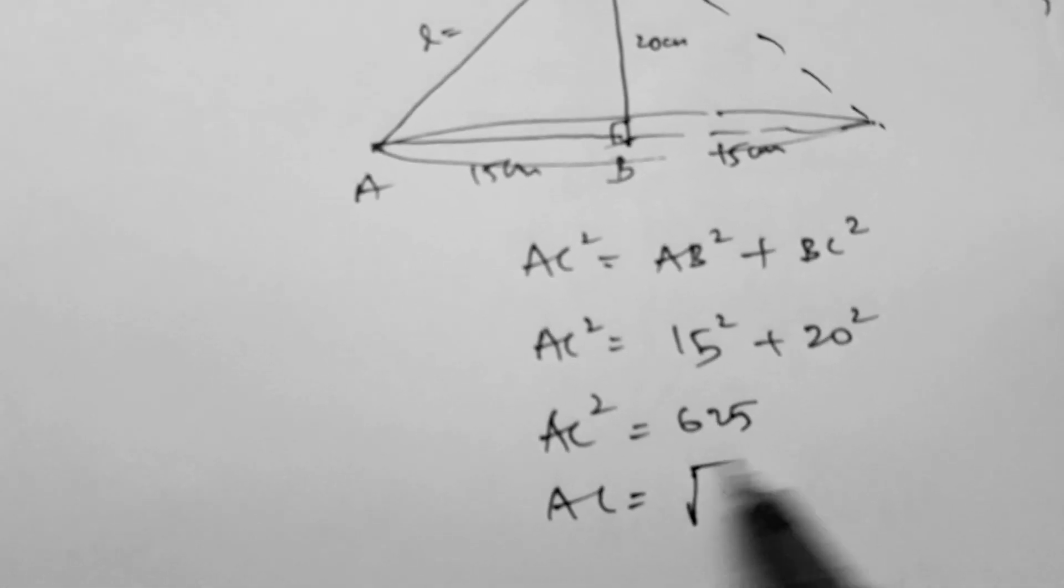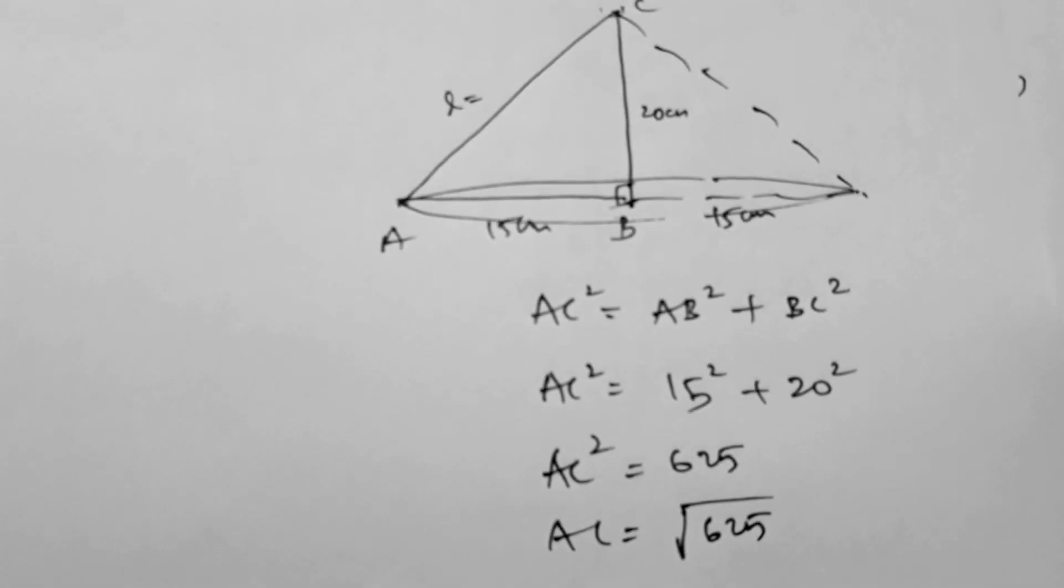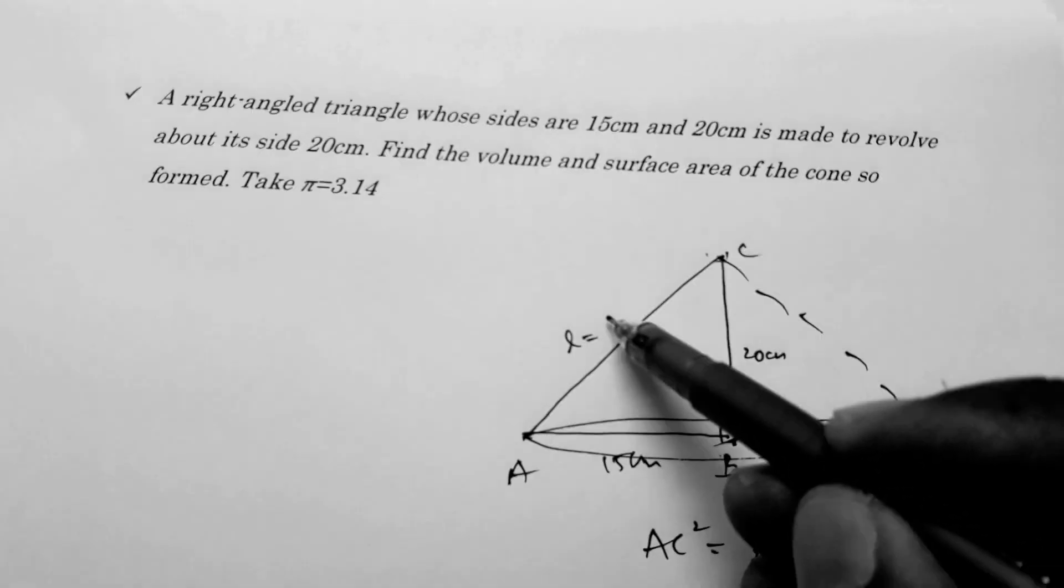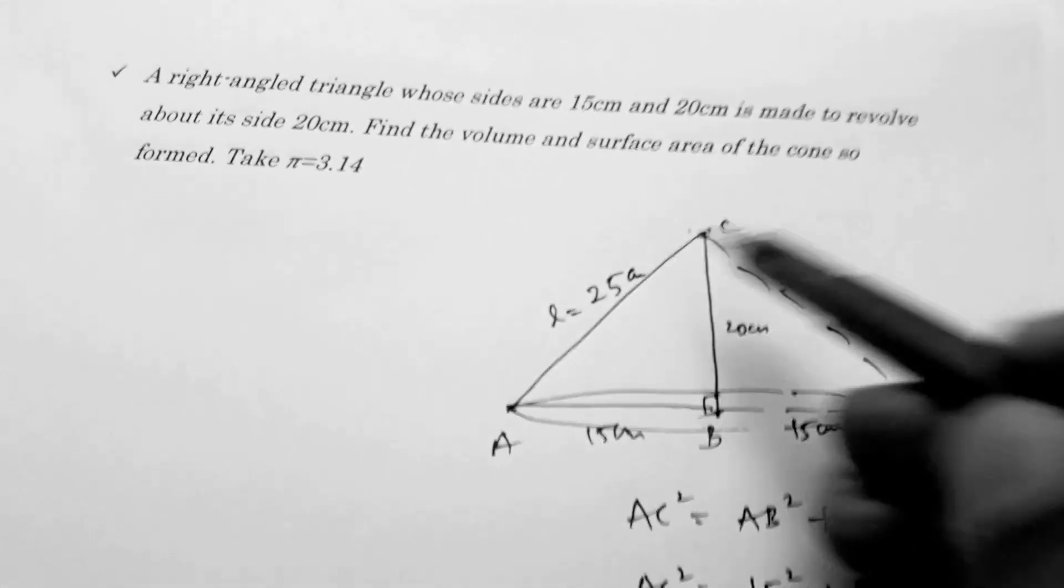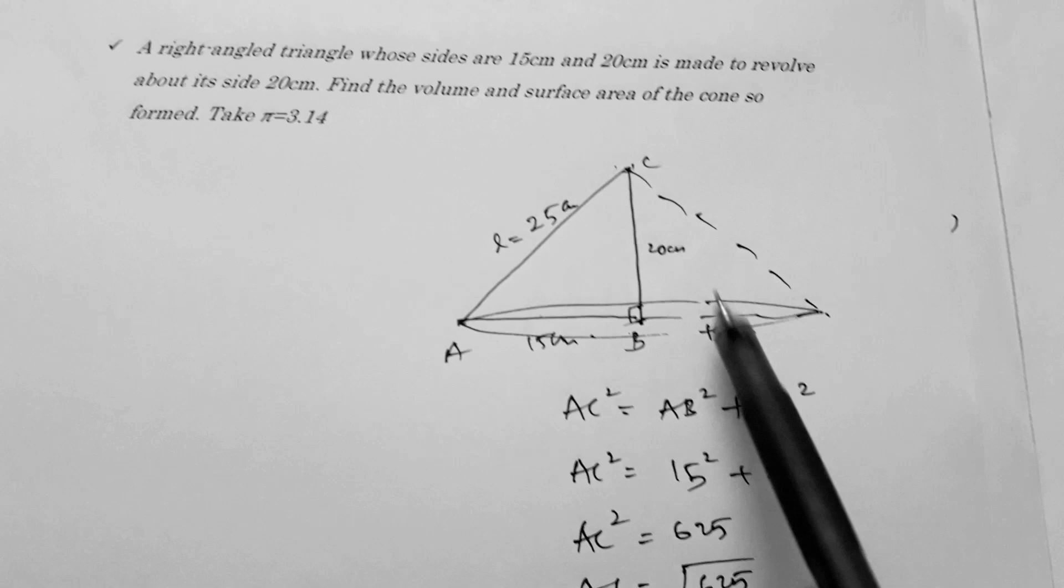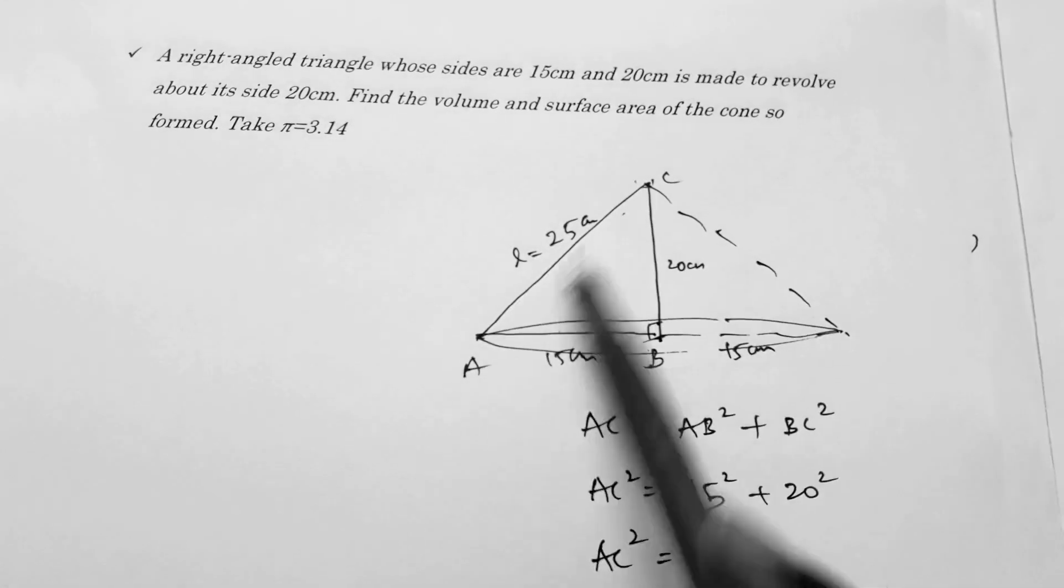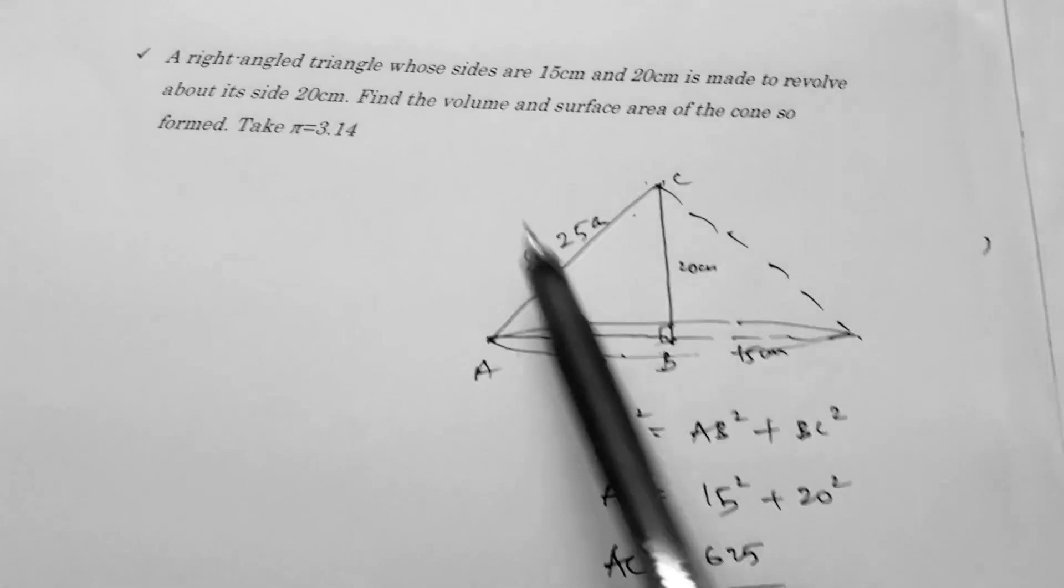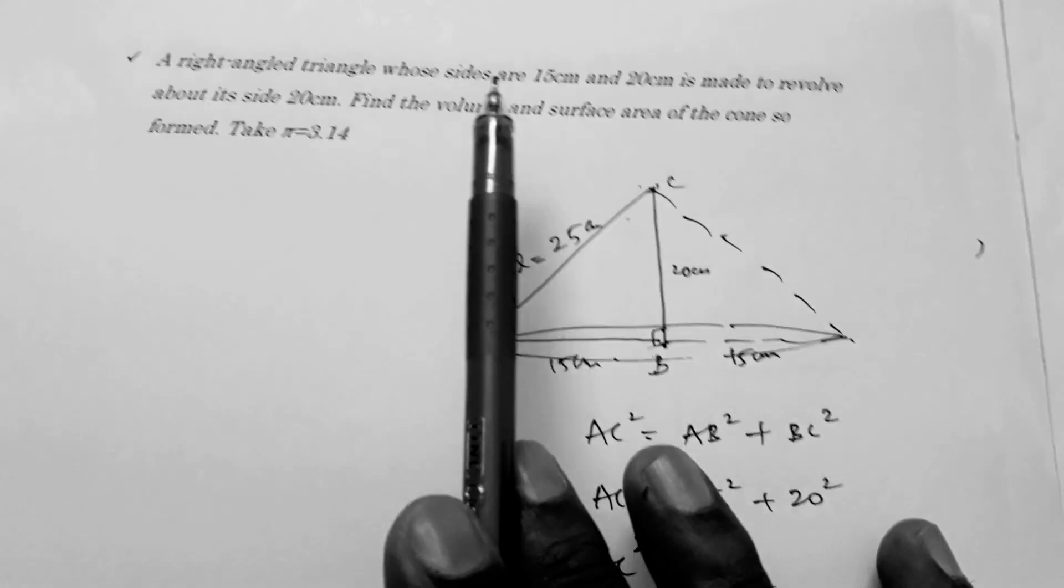AC equals the square root of 625, which is 25. So we've got slant height of 25 centimeters. Now the radius of the cone is 15, height is 20, and slant height is 25. They're asking to find the volume and surface area.